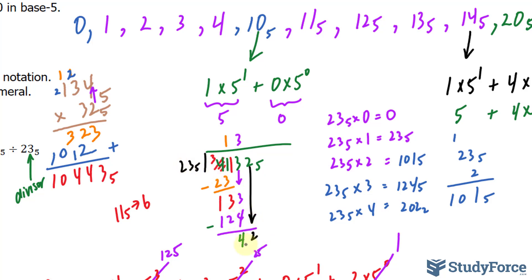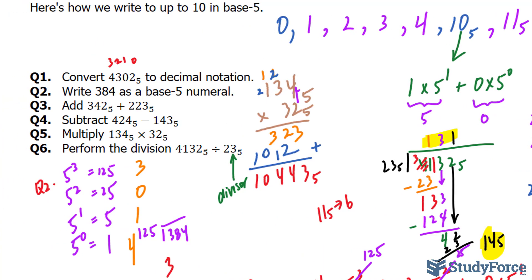How many times does 23 fit into 133? Looking at the multiples, it is 3. 3 times 23 is 124. Subtracting gives 4. We bring down the 2, making 42. 23 fits into 42 once. Subtracting 23 sub 5 from 42 sub 5 gives a remainder of 14 sub 5. Therefore, the quotient is 131 sub 5 with a remainder of 14 sub 5.